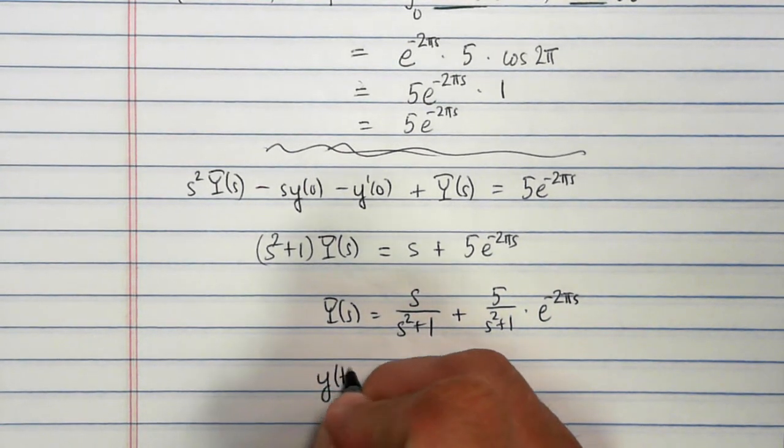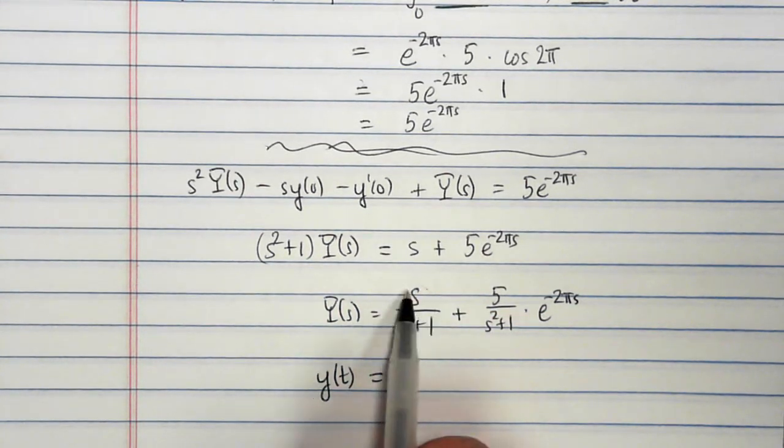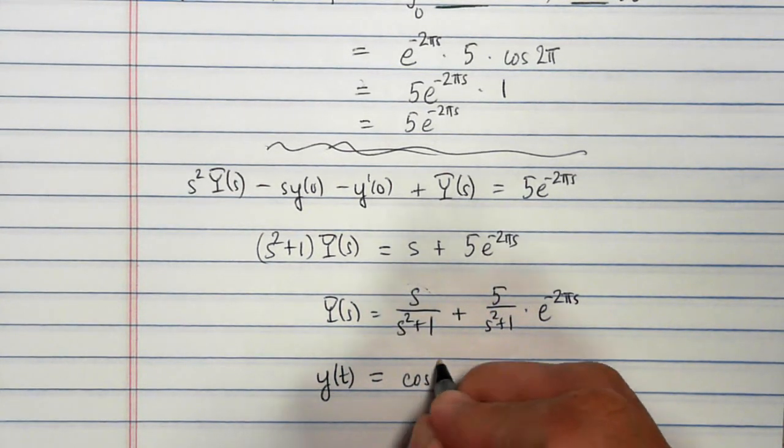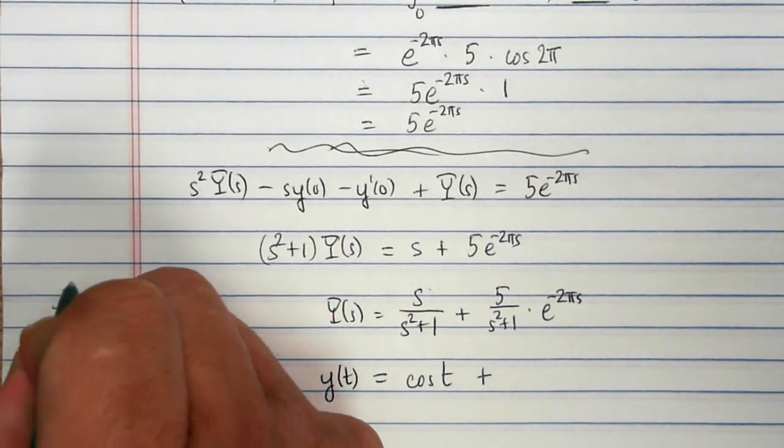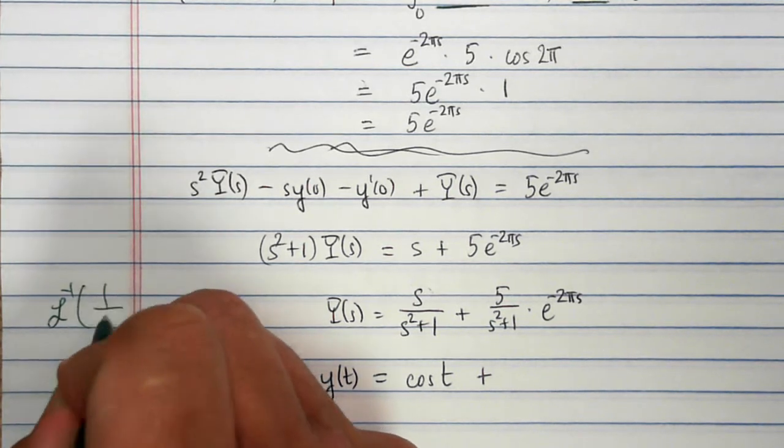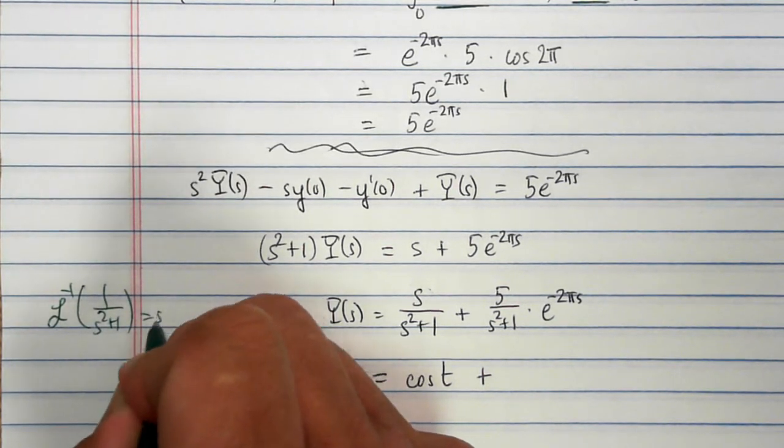So now we find the inverse Laplace transform. The inverse Laplace transform of this part is simply cosine t. Over here, just recall that the inverse Laplace transform of 1 over s squared plus 1 is sine t.